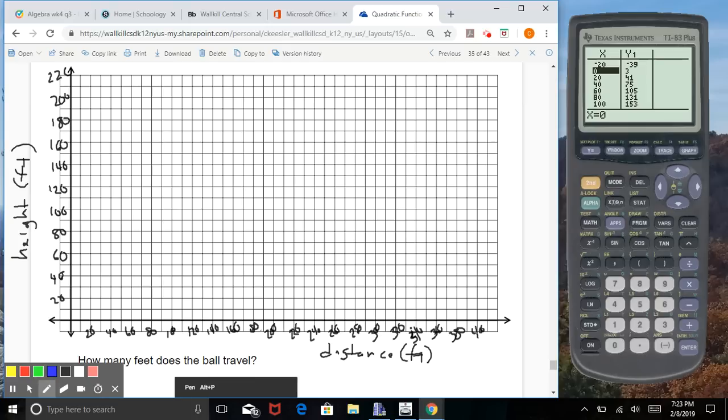And now we can start to graph our function. So we have 0 and 3 as our first point. 20 and 41. 40 and 75. 60 and 105. 80 and 131. I already made a mistake. So take your time and don't mess it up as you're going. 40 should have been 75. 60 is 105. 80 is 131. 100 is 153.